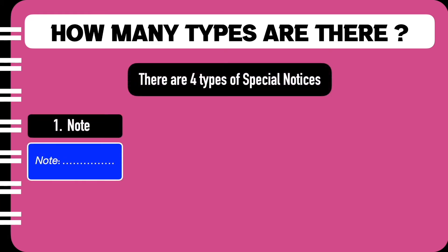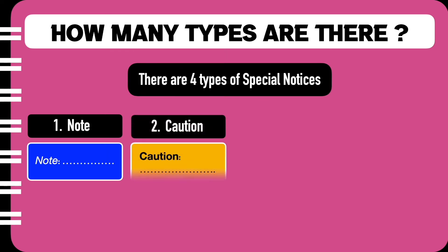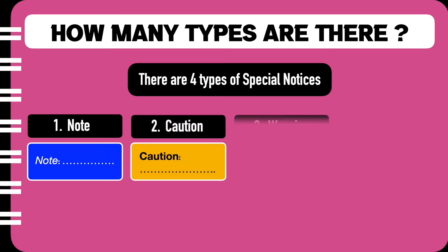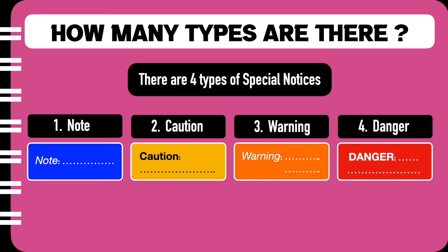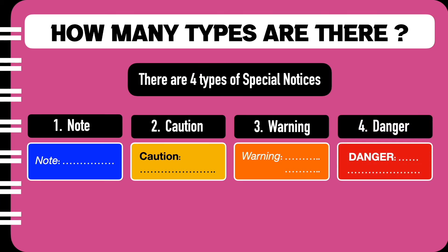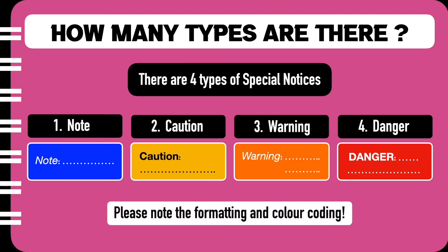The first one is a note. The second one is caution. The third one is a warning. And the fourth and last one is a danger notice. Now, I would like to draw your attention to the formatting and also the colour coding.